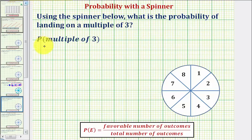So for the probability of landing on a multiple of three, let's first consider the total number of outcomes. While looking at the spinner, notice how there are eight equal size sections numbered from one through eight, and therefore there are eight total outcomes.